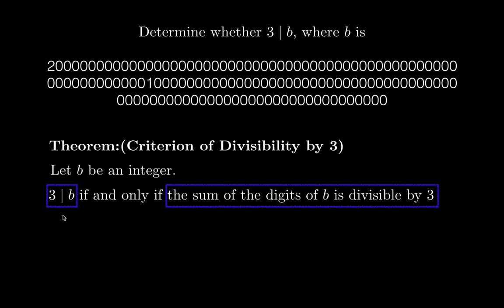I'm assuming everything is in base 10. So when I say digits of B, I mean the digits of B in base 10. We can check if 3 divides B by adding the digits. You can see it might seem circular, but the sum of the digits is of course a lot smaller than the actual number, making it easier to check divisibility by 3.